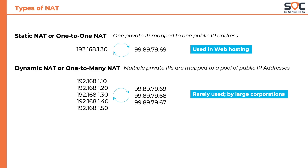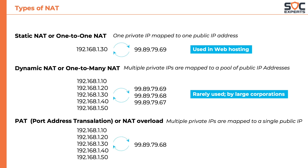Dynamic NAT is rarely used and is used by large corporations. Then we have PAT, port address translation, also called NAT overload. In this, multiple private IP addresses are mapped to a single public IP. This is the most commonly used type of NATing in homes and offices to provide internet connectivity to all the computers in the local network.